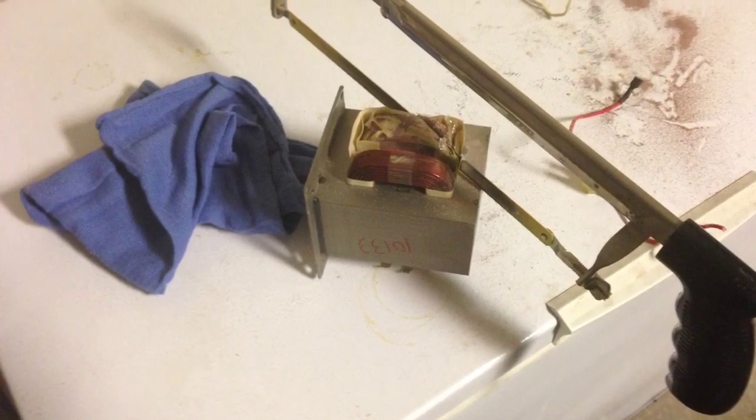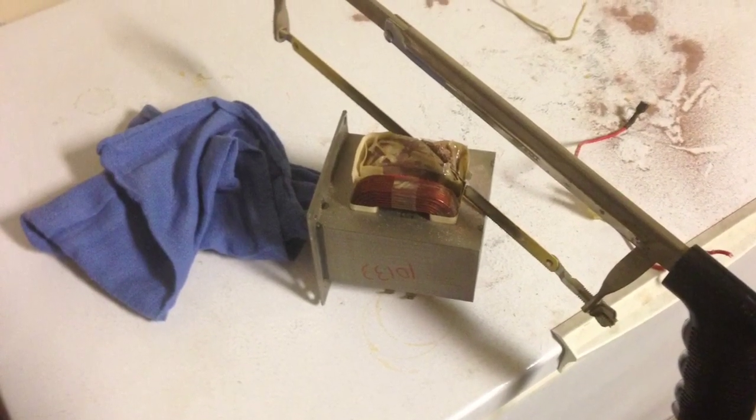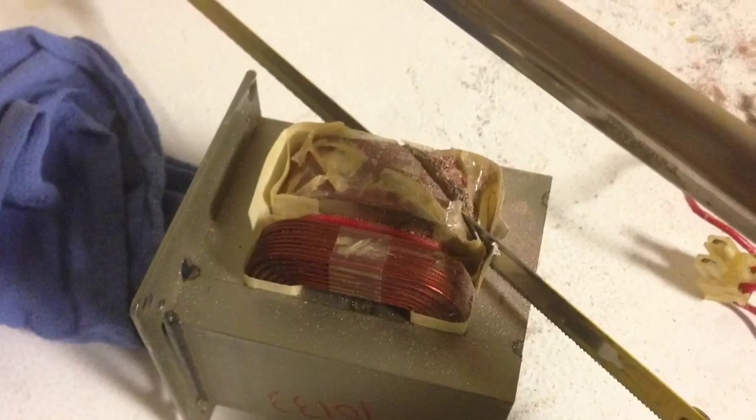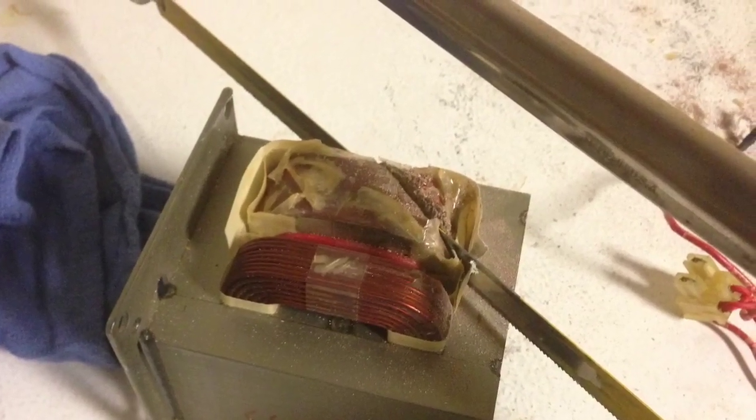Get an old microwave oven transformer, remove the secondary which is the thin wire with a hacksaw, keep the primary, connect that to a mains cable.